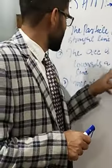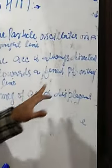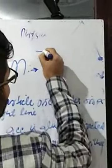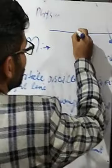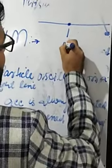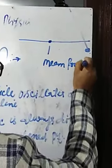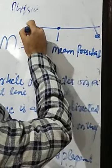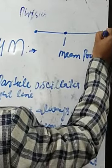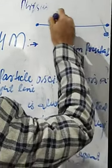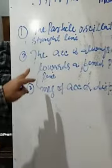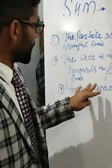The second condition: the acceleration is always directed towards a fixed point on the line — that is the mean position. If you take this fixed point as the mean position, there is one point and another point where the motion returns and repeats. The acceleration is always directed towards the fixed point on the line.